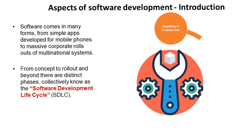The first phase is feasibility and problem definition. This is when we work out if a problem is actually feasible and whether we even should be building it in the first place. If we think we should, then we define the problem fully.